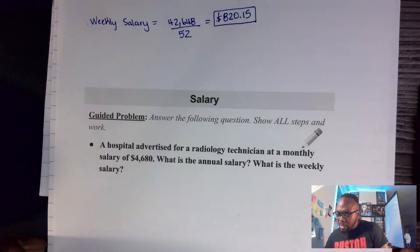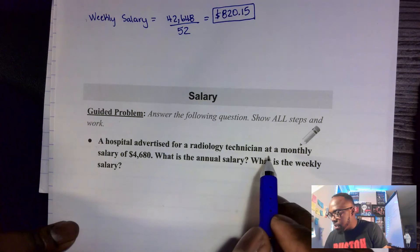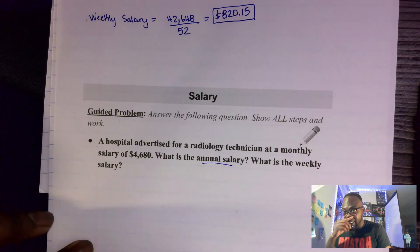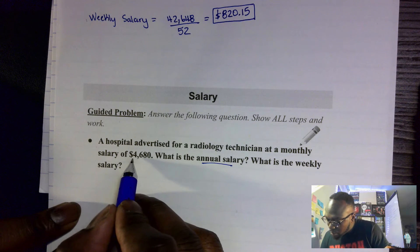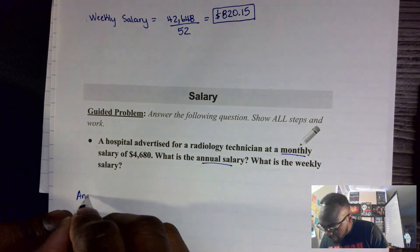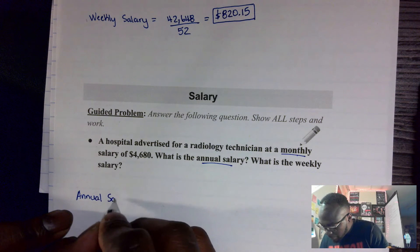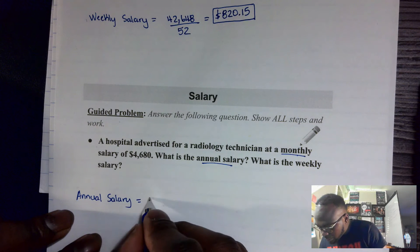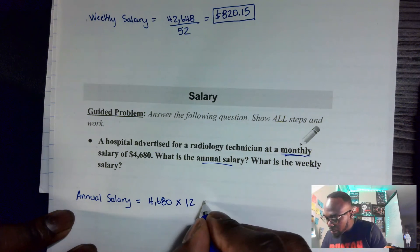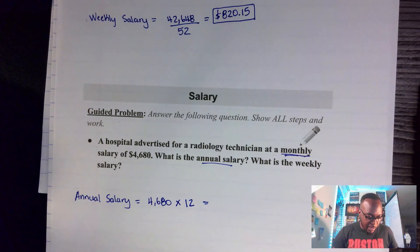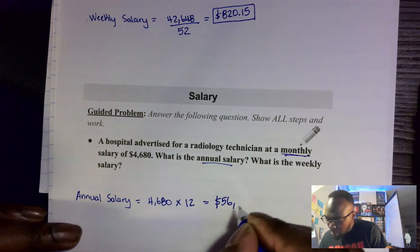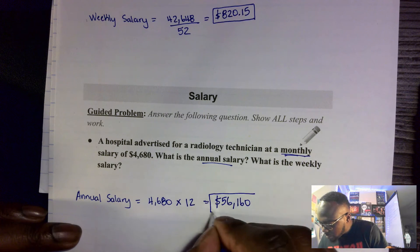Here's a more complex problem: a hospital advertises a radiology technician position at a monthly salary of $4,680. What is the annual salary and the weekly salary? Since I know the monthly, I multiply $4,680 by 12 to get the annual salary: 4,680 × 12 = $56,160.